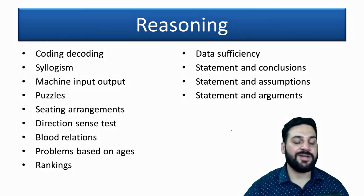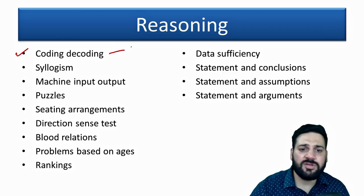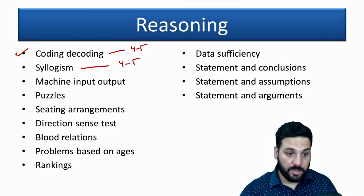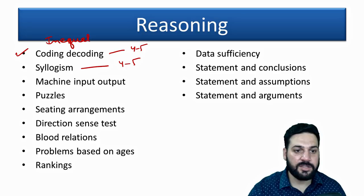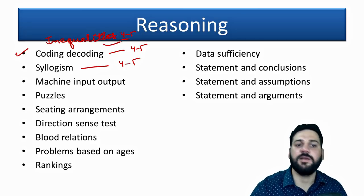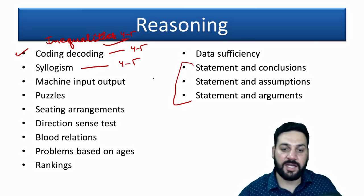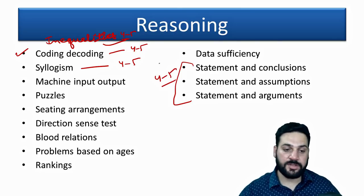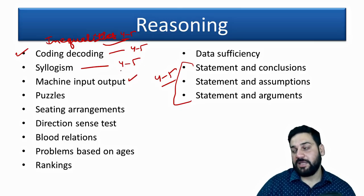For Reasoning, there will be Coding-Decoding and Syllogisms — four to five questions each if they appear. Inequalities is a very important topic and may carry four to five questions. Statement and Conclusion is really important and commonly asked. Statement and Assumptions, Statement and Arguments, and Machine Input-Output are also key topics, with Machine Input-Output carrying four to five questions if it appears.